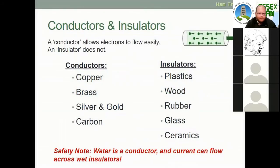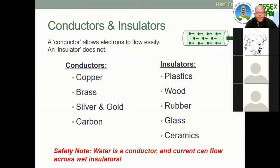A conductor allows electrons to flow easily; an insulator does not. Good conductors include copper, brass, silver, gold, and carbon — hence many wires are made of copper and components often have gold coatings. Insulators include plastics, wood, rubber, glass, and ceramics. Glass and ceramics in particular are used widely in electronics components because they are very good insulators.